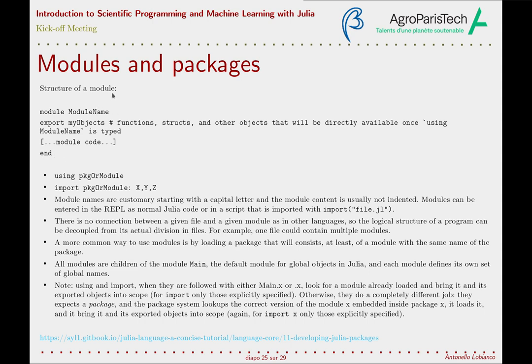Modules are organized hierarchically, and all modules are children of the module Main — the default module for global objects in Julia — and each module defines its own set of global names. Note that while modules can have sub-modules (child modules), this is rarely implemented in Julia. Rather, most authors prefer writing separate packages, so we are not going to see them. The syntax would be what you'd expect — writing one module inside another to define child modules and using the dot syntax to refer to them, for example module1.childb.subchild3.